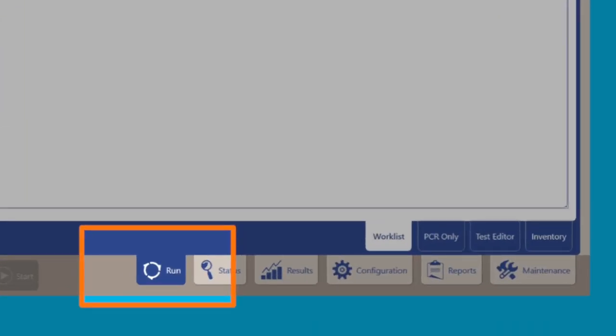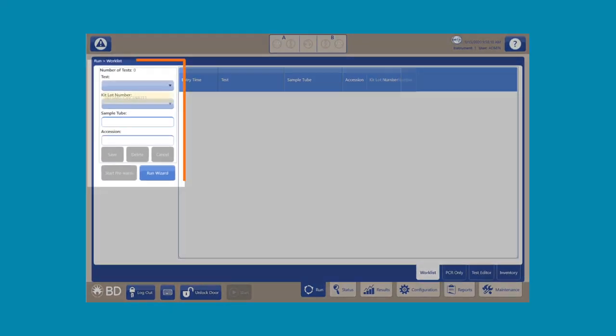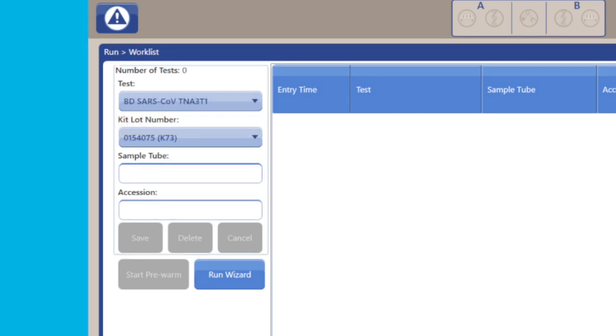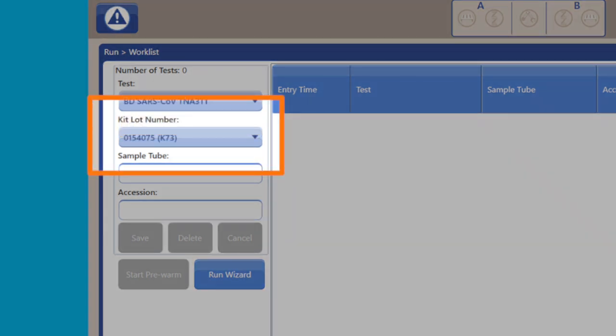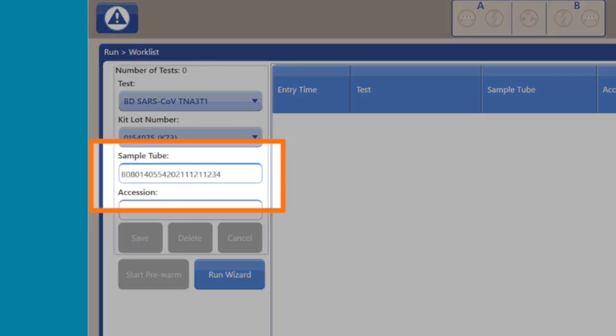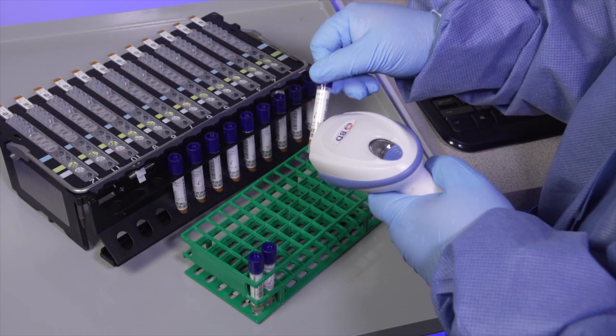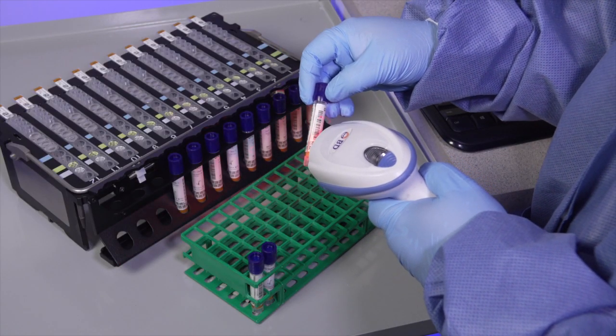Navigate to the work list by selecting the Run tab. Using the pull-down menu, select the UDP previously created, for example, BDSARS CoV-2 TNA-3T1. Select the appropriate kit lot number found on the outer box from the pull-down menu. Enter the sample buffer tube ID, patient ID, and a session number, if applicable, into the work list, either by scanning the barcode with the scanner or by manual entry.